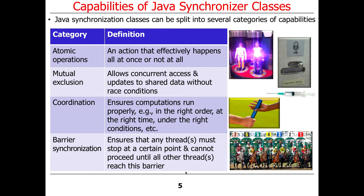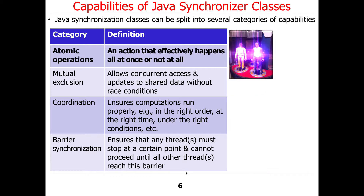It turns out that the Java synchronization classes can be split into several capabilities, or maybe a better term is categories of capabilities. One thing we have are so-called atomic operations, which are actions that either happen all at once or don't happen at all — like a transporter beam.